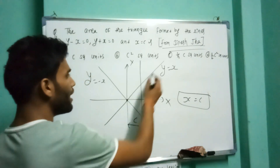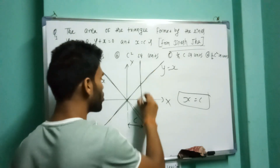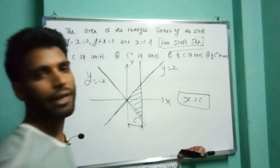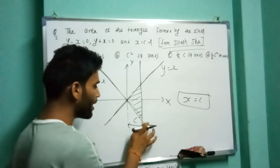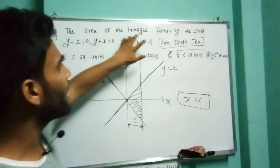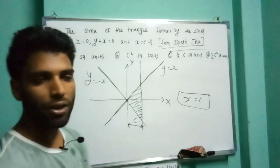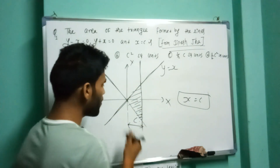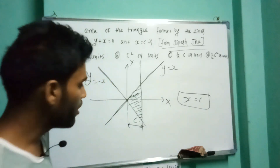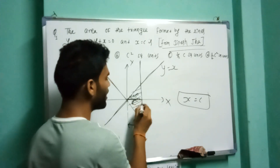This is the first line, the second line, and the third line cutting to form the area. This is the area of the triangle formed by these three lines. The angle is 45 degrees and the length is c.